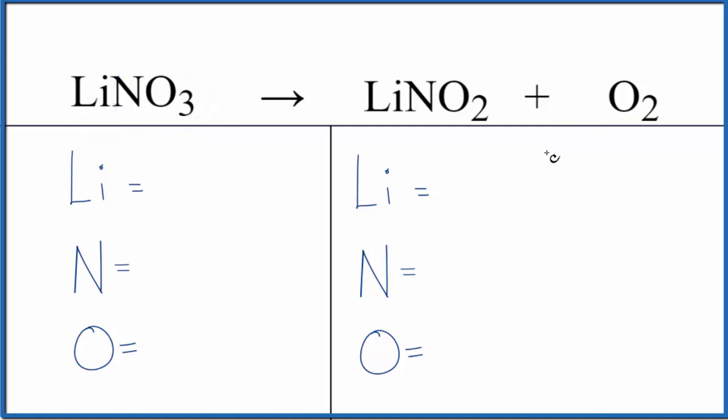We'll also look at the type of reaction. We have this one compound here breaking apart into two separate compounds. We call that a decomposition reaction. You could also call this a redox reaction because the oxidation numbers on the nitrogen and the oxygen are changing state as well.